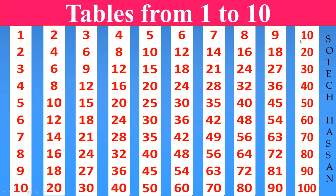10th table. 10 1s are 10. 10 2s are 20. 10 3s are 30. 10 4s are 40. 10 5s are 50.